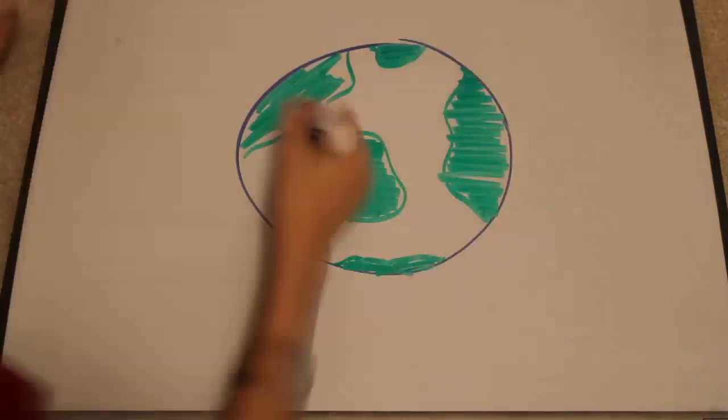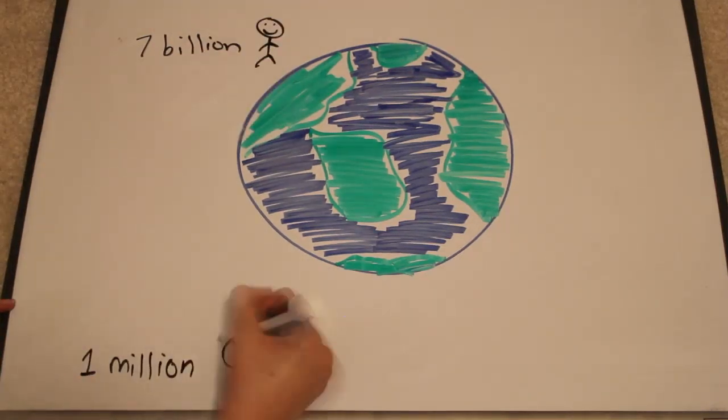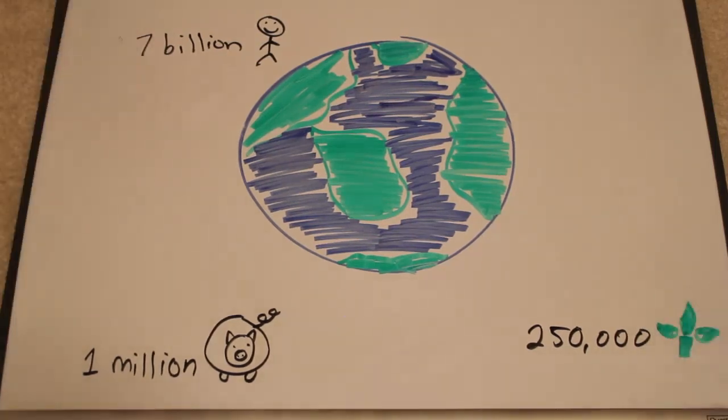This is our beautiful planet, Earth. There are about 7 billion people, millions of different species, and 250,000 types of plants that inhabit Earth.